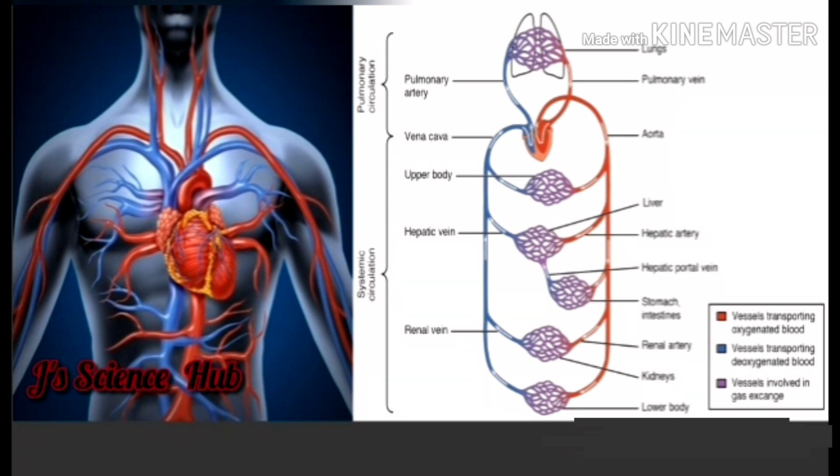The human circulatory system is considered as a double circulatory system because before it transfers to the cells, it flows out of the heart twice.